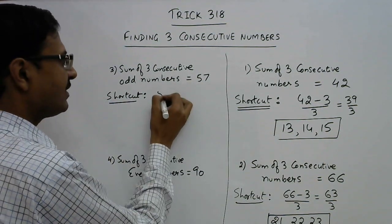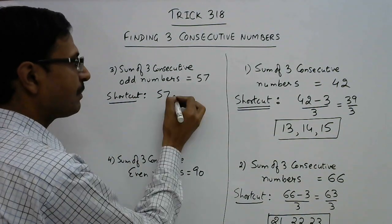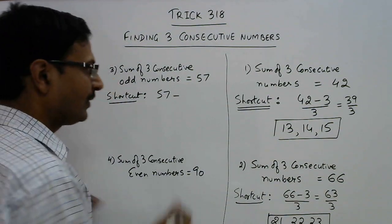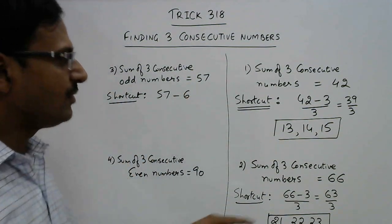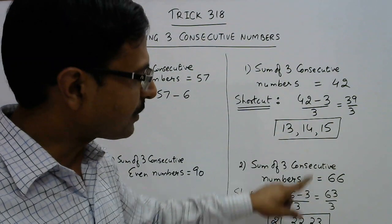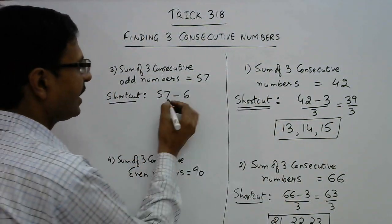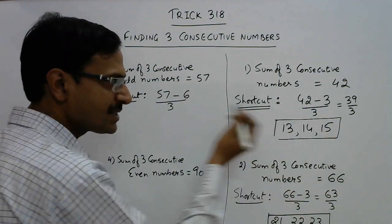Whatever sum is given, this time you have to subtract a different number. That number is 6, which is double the number we were subtracting for getting the consecutive numbers. So subtract 6 and divide by 3.